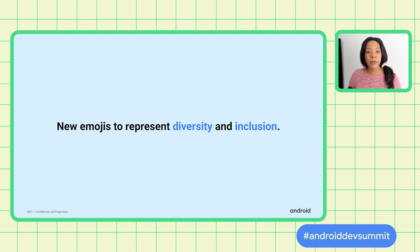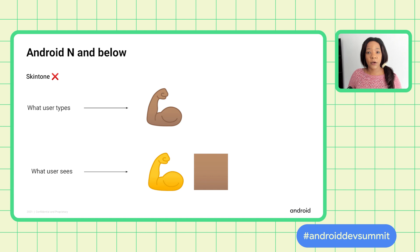Another problem is that as Unicode adds new emojis that aim to represent more diversity and inclusion of emoji types, those emojis are not fully supported on Android. There are various levels of support depending on which version of Android is running. On Android N and earlier versions, skin tone is not properly represented. Here you can see an example of a user sending an emoji representing an arm with a brown skin tone, but the receiver gets a decomposed version that shows an arm and a square representing the skin color that should be applied to the arm.